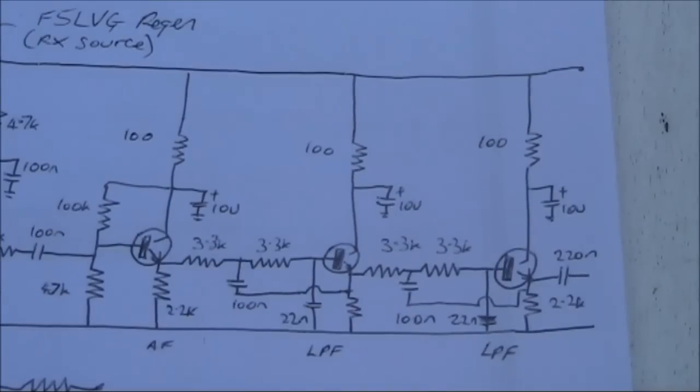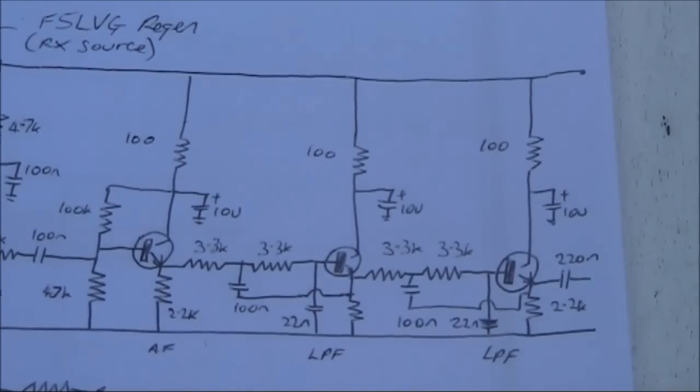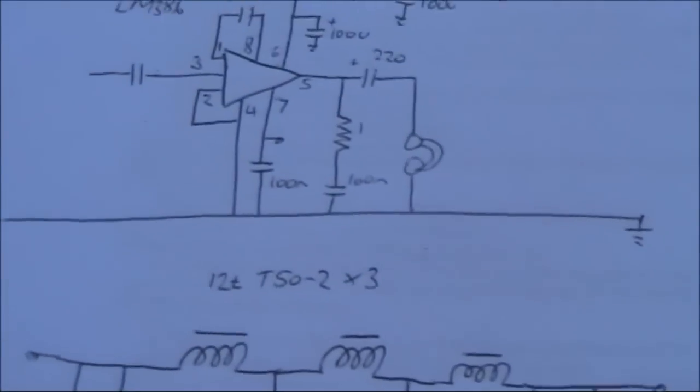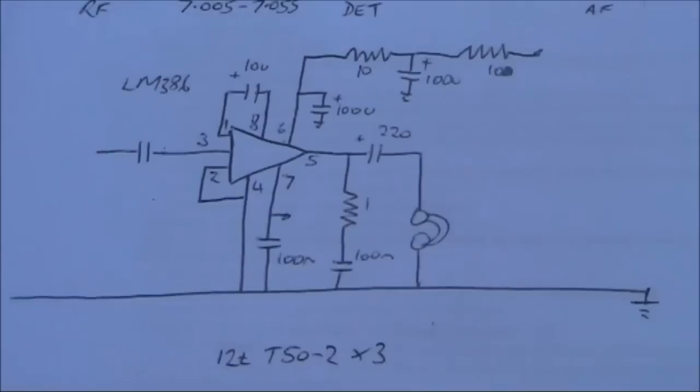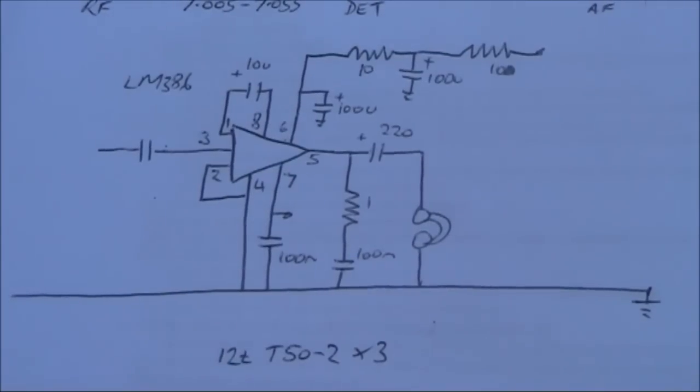The output of that, you can see the free end of the 220 nF capacitor, goes to your very standard LM386 amplifier circuit.